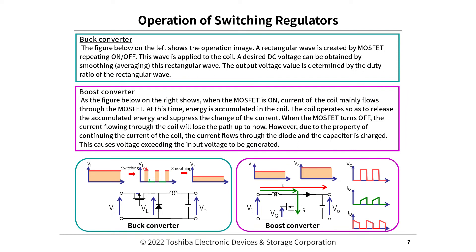There are two types of switching regulators. For the buck converter, as shown in the figure below on the left, a rectangular wave is created by the MOSFET repeating on and off. This wave is applied to the coil, and a desired DC voltage can be obtained by smoothing this rectangular wave. The output voltage value is determined by the duty ratio. For the boost converter, when the MOSFET is on, current flows through it and energy is accumulated in the coil. When the MOSFET turns off, the coil current flows through a diode and charges a capacitor, causing a voltage exceeding the input voltage to be generated.